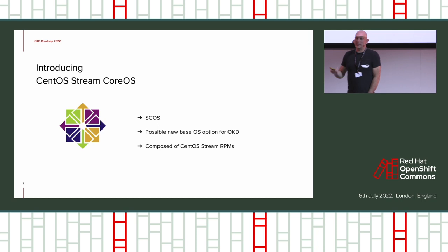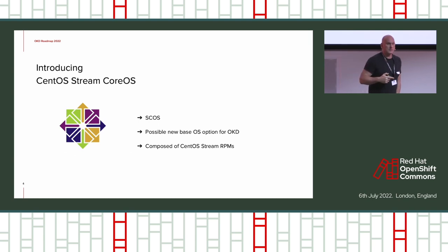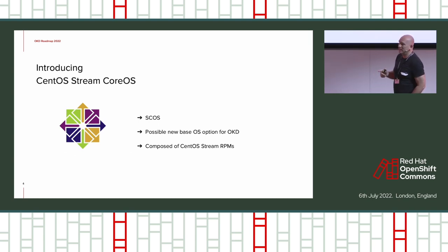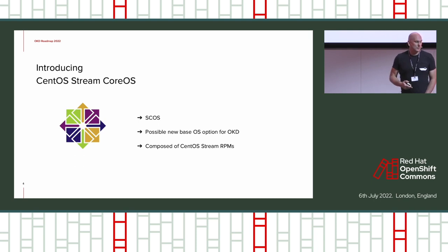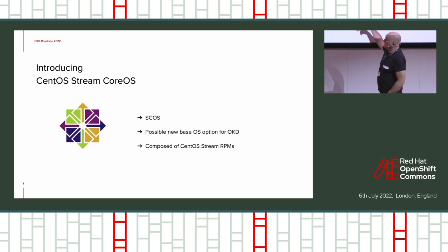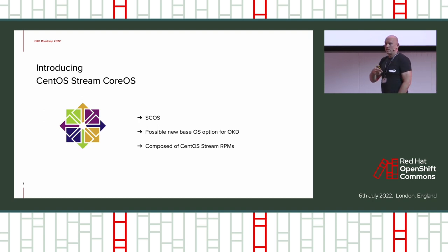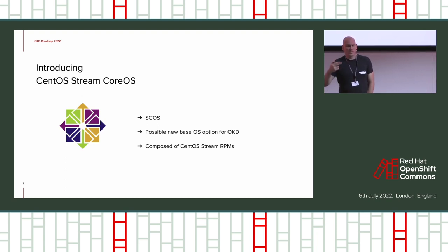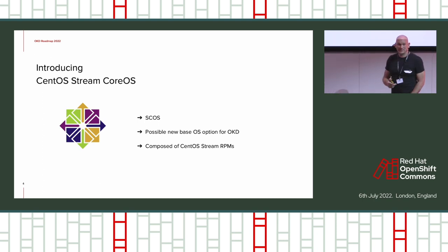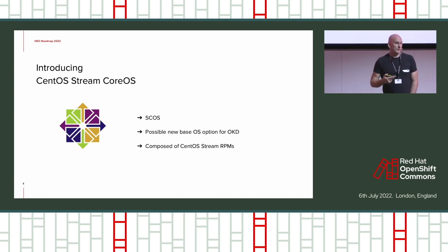Red Hat is asking the community — outside Red Hat — whether this is something useful and something we want. They're going to release a preview version, probably around July/August. We'll arrange some experiments where people can play with it. If we want this as a community, Red Hat will do a dual release: OKD on FCOS (Fedora CoreOS) where the latest features hit first, plus this hardened CentOS Stream CoreOS version. If the community wants it, they'll do that dual release; if not, it stays within Red Hat.